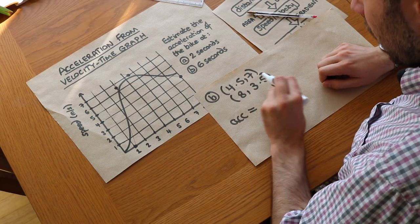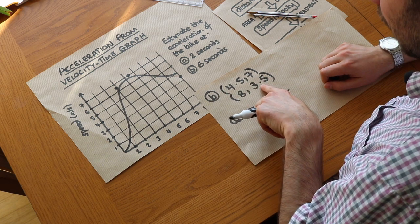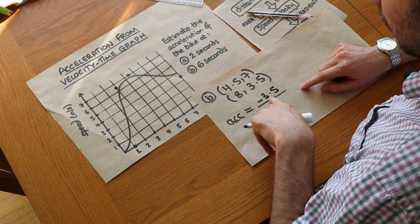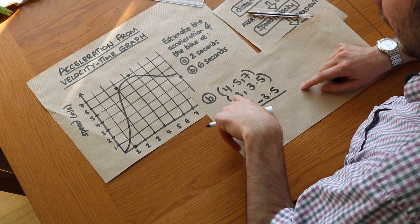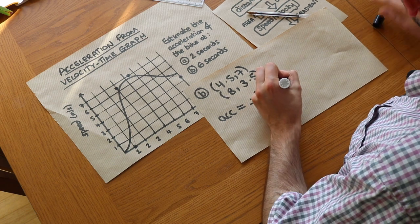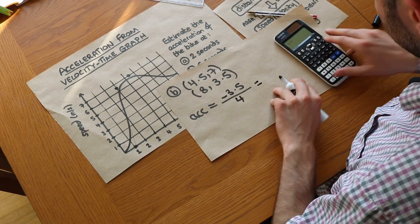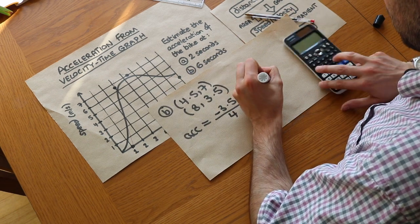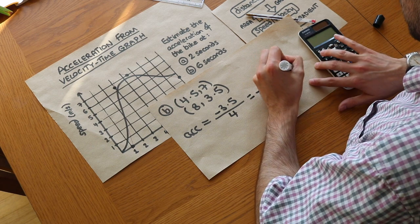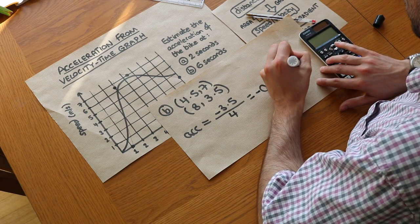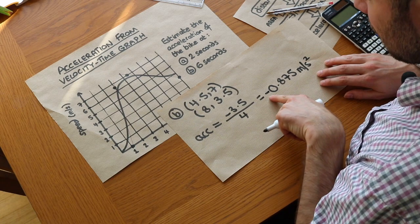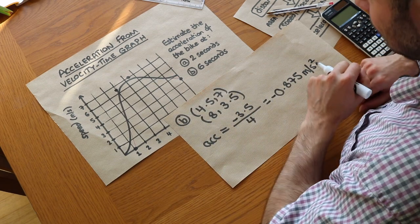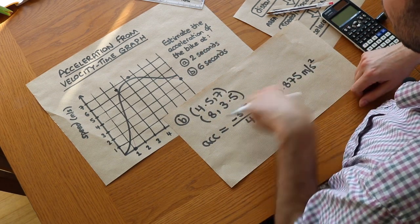So we do the change in Y, and we can see that to get from 7 to 3.5, it's going down by 3.5. And then that's over the change in X. Well, the X value is increasing by 4. So we get that. And if we do that on a calculator, that gives us minus 0.875 meters per second squared. And we can see that the acceleration is negative here. And that's right, because it's decelerating. So the velocity is actually going down. So the rate of change is negative. The acceleration is negative.